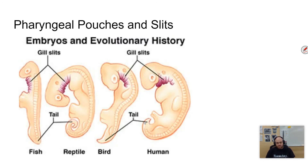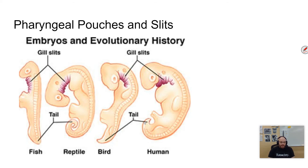Pharyngeal pouches or slits — sometimes called gills — are named because they're around the pharynx, which is in the neck area of an organism. These are openings that lead from the pharyngeal cavity — the nose, mouth, throat area — to the outside, and they form by folding in the ectoderm.